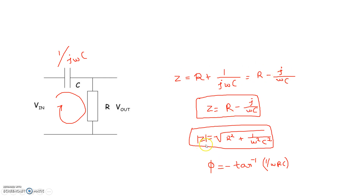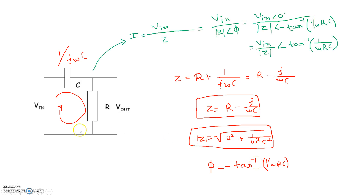From Z = x + jy form, we take the magnitude and phase: |Z| = √(R² + 1/ω²C²), and φ = −tan⁻¹(1/ωRC). The reason for the negative sign in the phase expression was discussed in detail in my previous video — the link will be posted in the description.